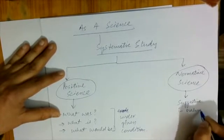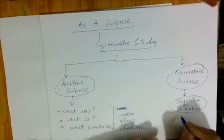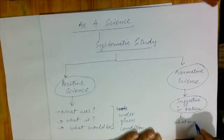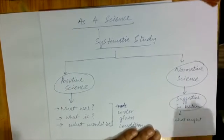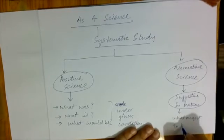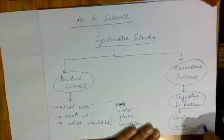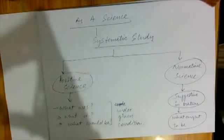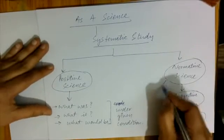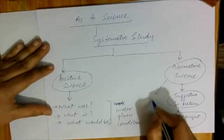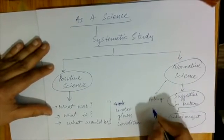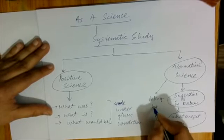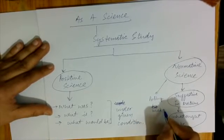Normative Science is a science which tells us 'what ought to be' — what should happen, what should be done. If a country needs to develop, or for any policy-making, Normative Science deals with policy implications and policy-making.